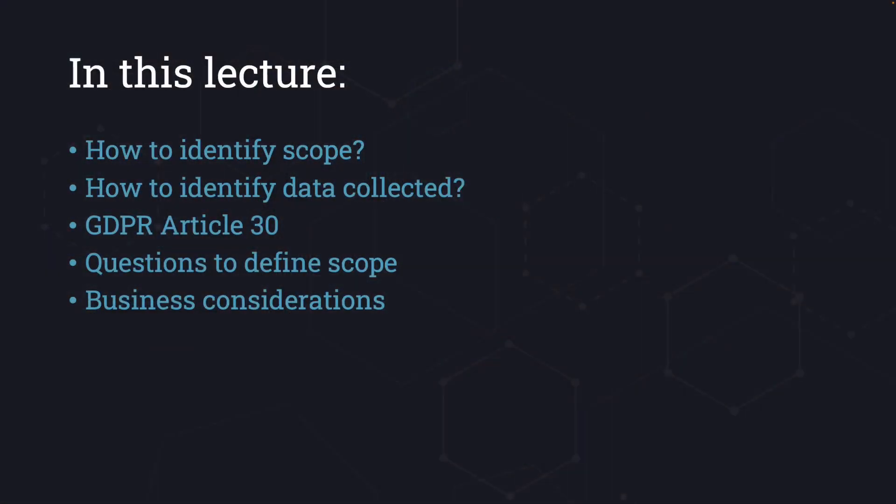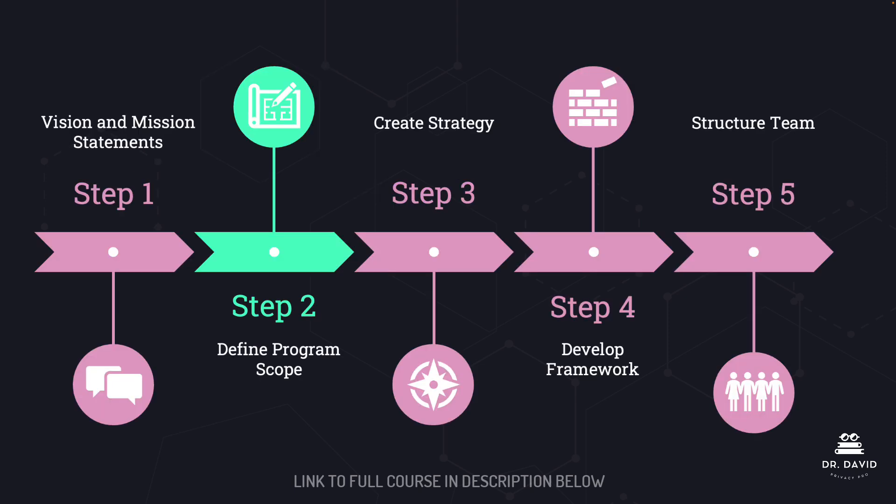In this lecture, we are going to begin looking at step two in our roadmap for creating a privacy program governance framework. We are going to discuss how to define the program's scope. Here's our roadmap — we went over step one in the previous lecture, which was vision and mission statements. We are now in step two, which is defining program scope.